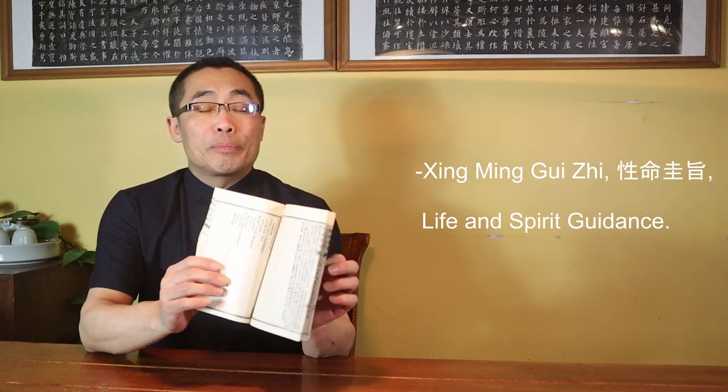For example, according to classic Xiu Dao documents such as Xing Ming Gui Zhi or Life and Spirit Guidance, Xiao Zhou Tian helps to gather External Medicine or Wai Yao, while Mao You Zhou Tian helps to gather Internal Medicine or Nei Yao, which needs to be refined further in order to achieve much more profound benefits of the practice. Therefore, Mao You Zhou Tian is the way to achieve a deeper energy refinement compared to Xiao Zhou Tian, which is the necessary step in order to make the energy body ready for the upcoming Da Zhou Tian.